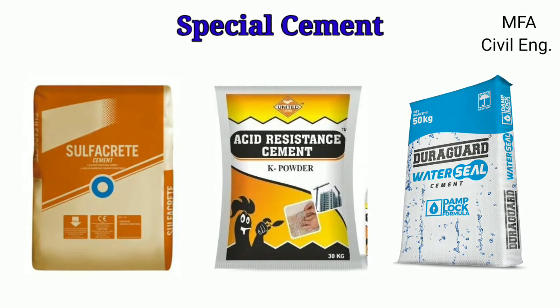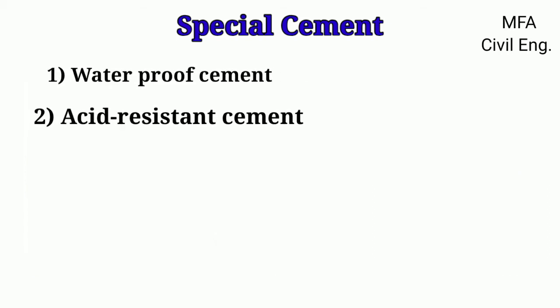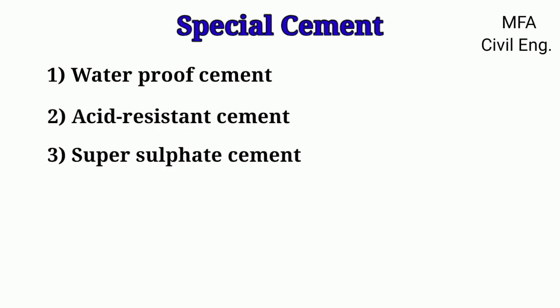Hello everyone, my name is Fuzzle and you are watching MFA Civil Engineering. There are some special types of cement manufactured for special purposes. This is done by varying the proportion of different ingredients or adding some extra ingredients during the manufacturing process. These special types of cement are: waterproof cement, acid resistant cement, super sulfate cement, colored cement, and Sorel cement.